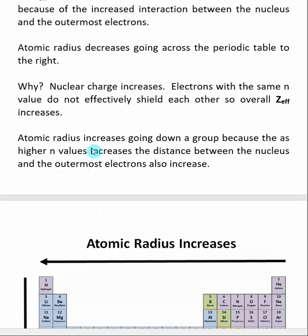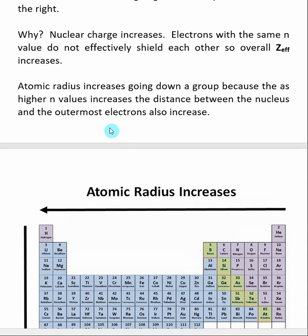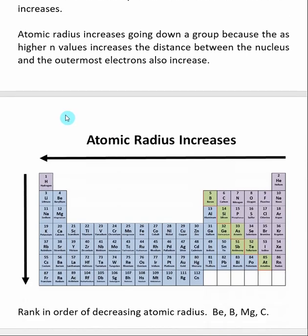The atomic radius increases as we go down the periodic table. What's easier to understand is that as we go down the periodic table, we are going to larger N-values. An N-value is related to the distance of electrons away from the nucleus. So as we go down the periodic table, the N-value is going to increase, and correspondingly our atomic radius is also going to increase. The overall trend is that going left and down in the periodic table, atomic radius tends to increase.